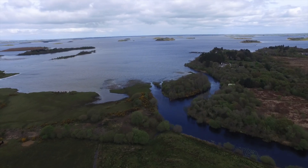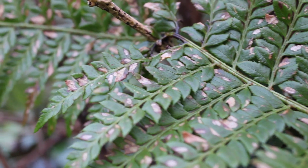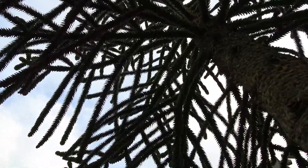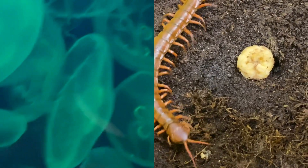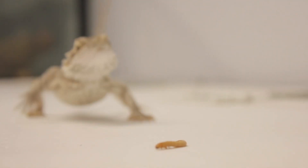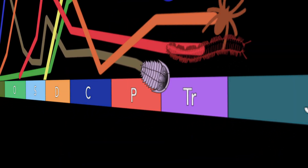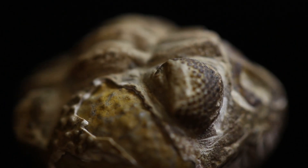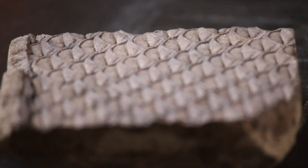Life has existed on Earth for at least three and a half billion years. During this vast stretch of time, living organisms have continuously changed and adapted, overcoming several devastating mass extinction events along the way. Much of this important and profoundly moving evolutionary story has been relayed to us through the fossil record.